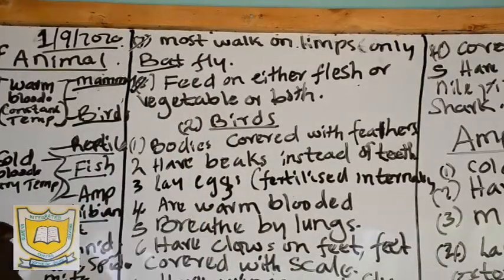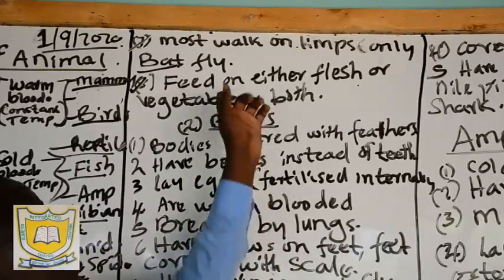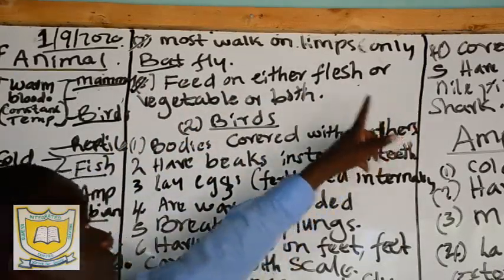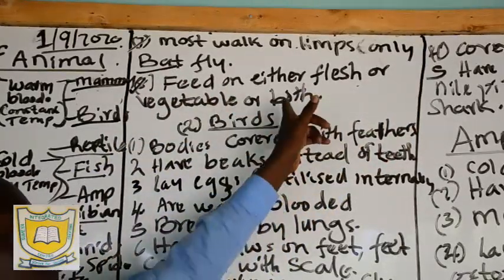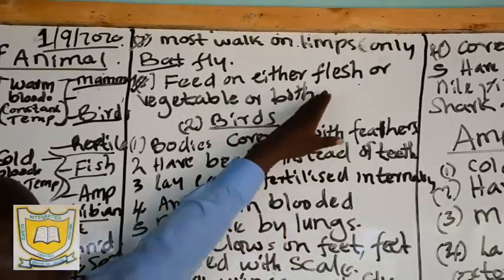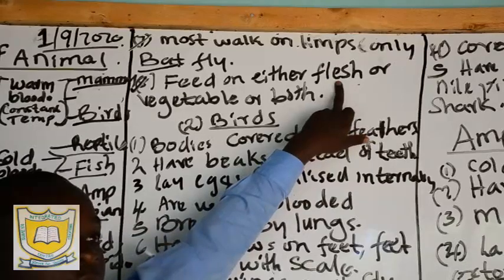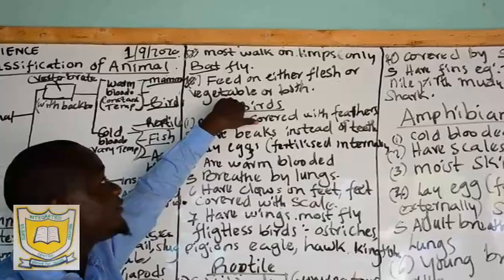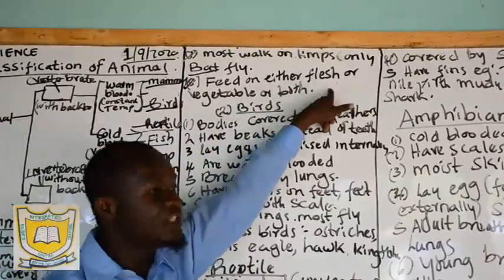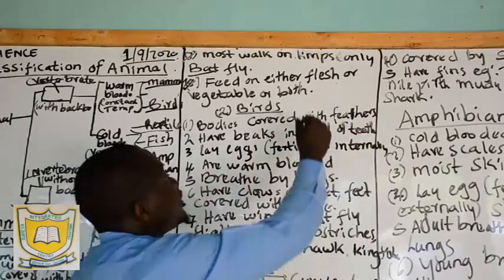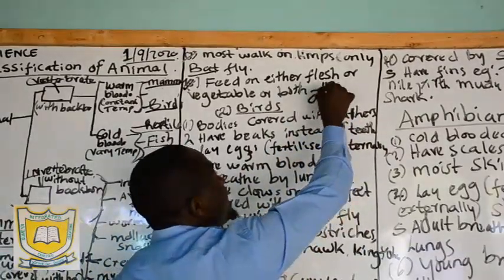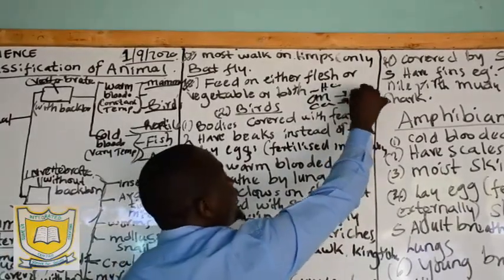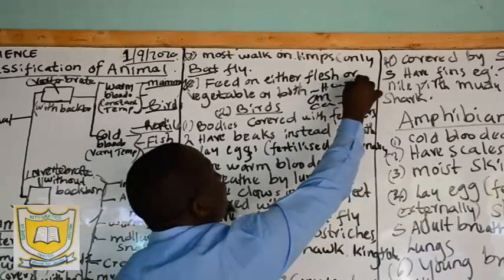Characteristic number eight, which is the last: feeding. Mammals either feed on flesh, on vegetables, or on both. The name given to animals that feed on flesh is carnivorous; those that feed on vegetables are herbivorous; and those that feed on both flesh and vegetables are omnivorous. Carnivorous feed on flesh, herbivorous feed on vegetables, and omnivorous feed on both.